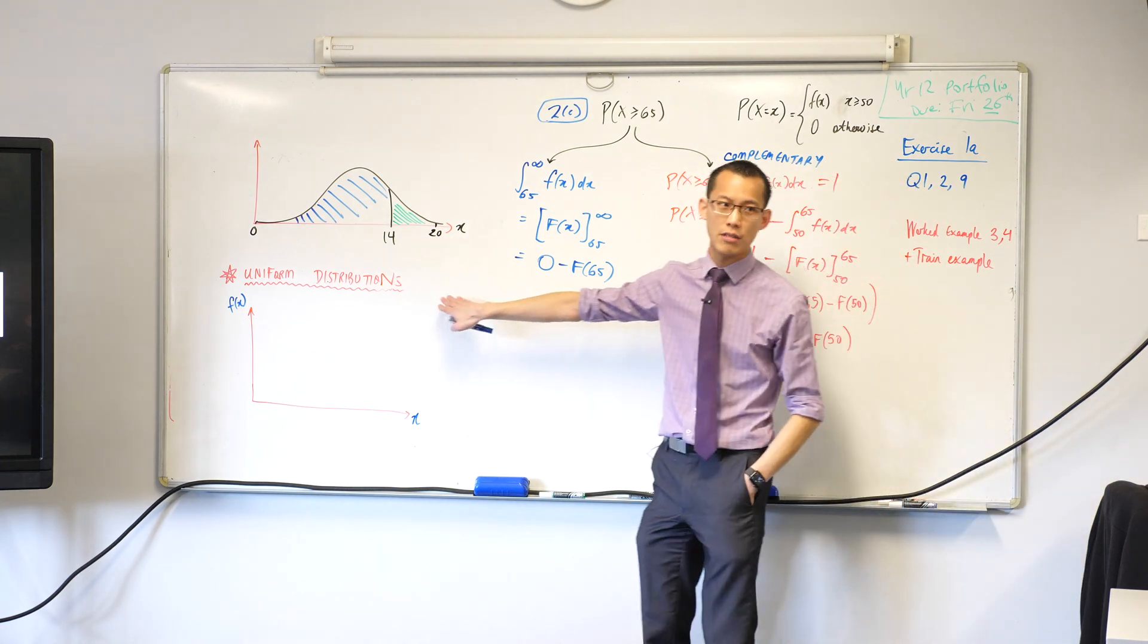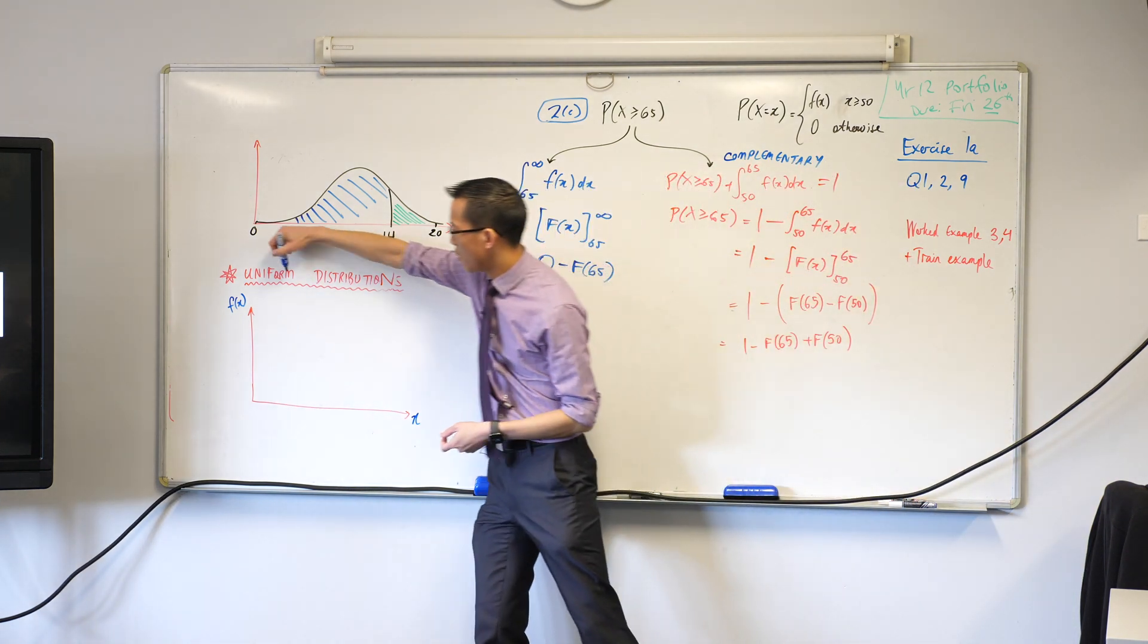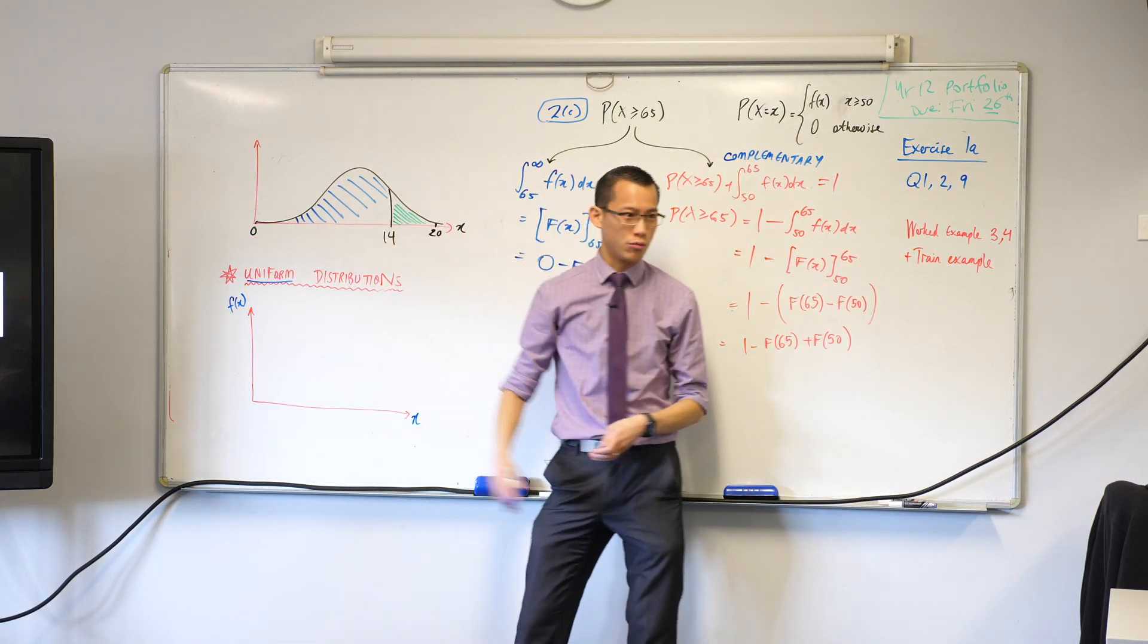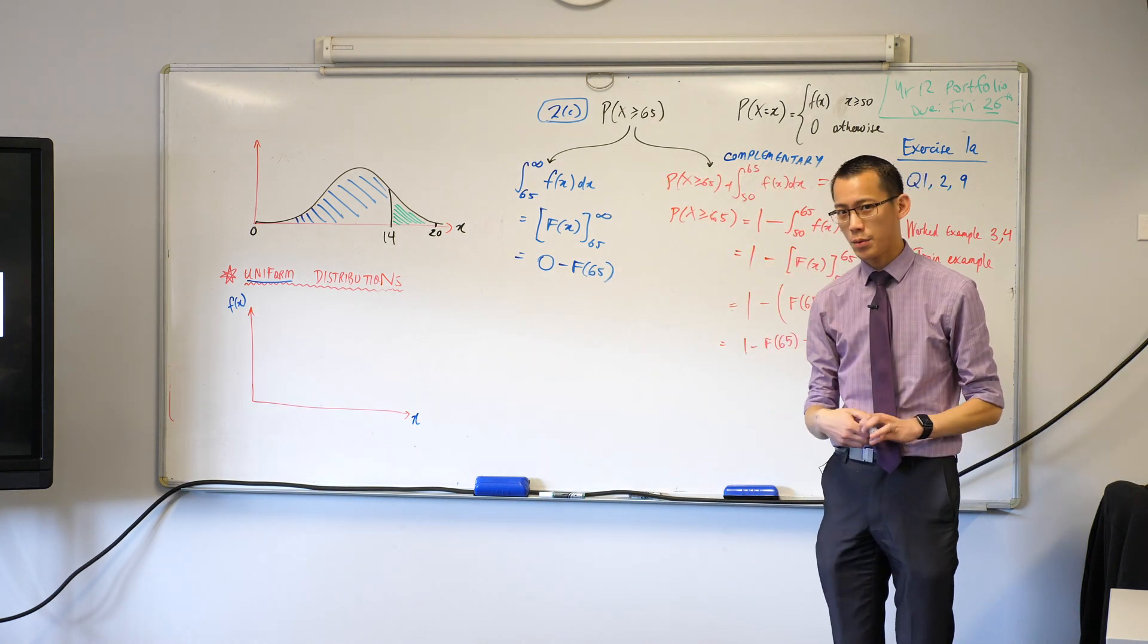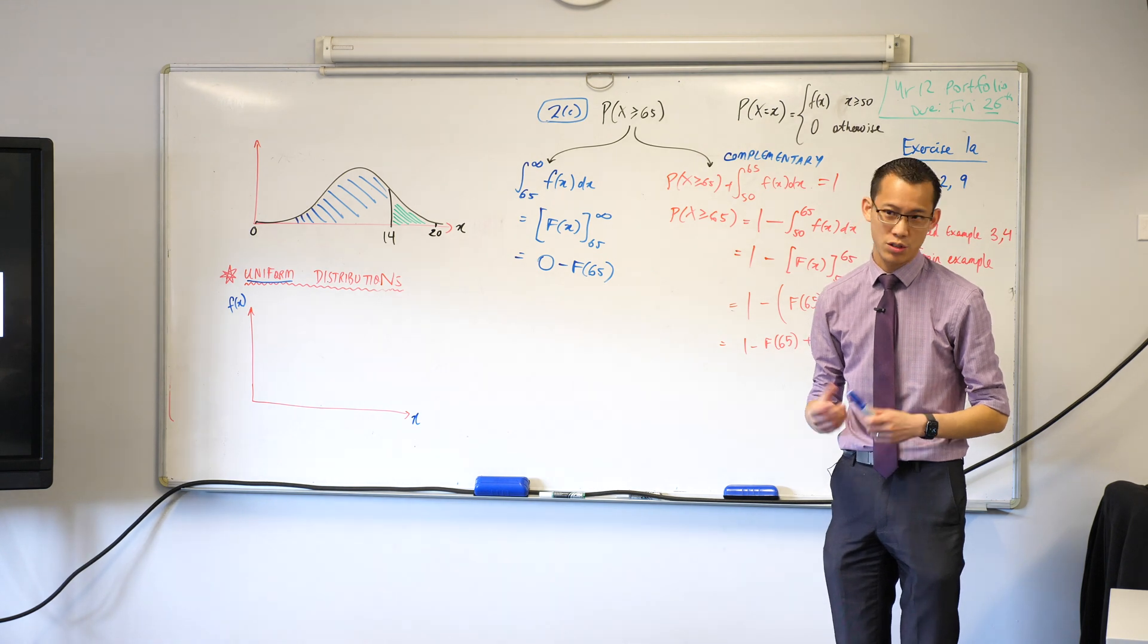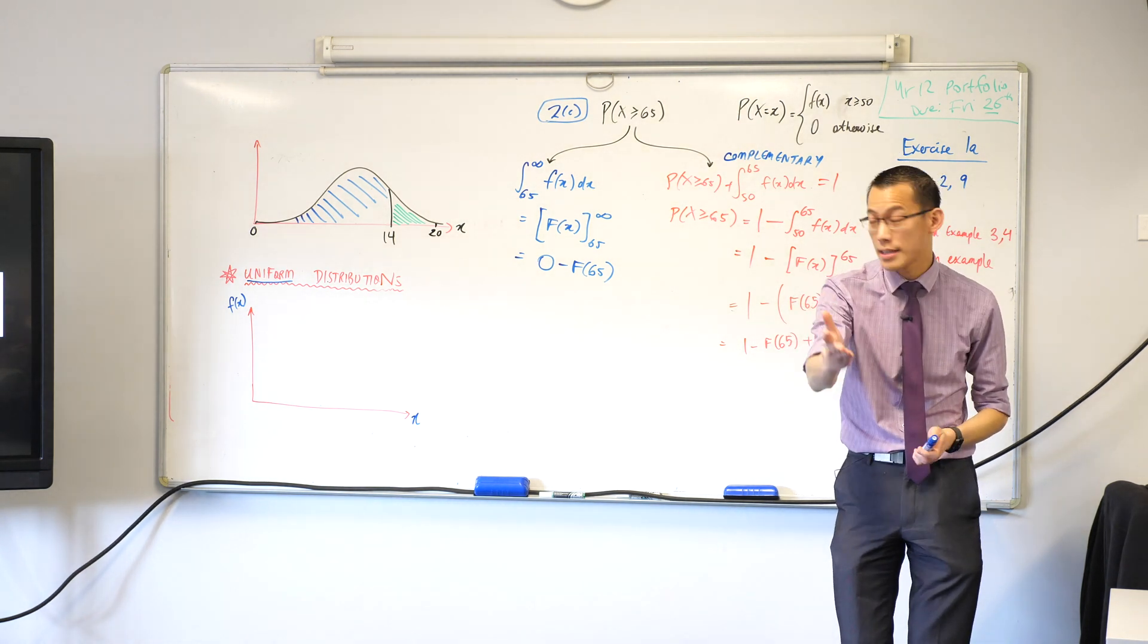But actually one of the most common situations is what we call a uniform distribution, which is not a weird unusual shape, it's a very simple shape. What does it mean when we say something's uniform, when students wear uniforms? It's the same.